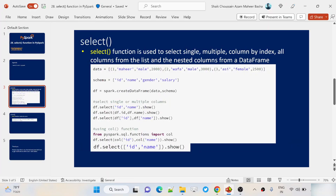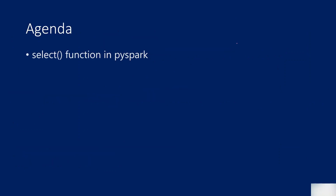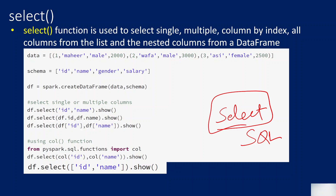Hi friends, welcome to OFA Studies YouTube channel. This is part 28 in the PySpark playlist. In this video we are going to discuss the select function in PySpark. By now if you have seen my PySpark videos you might have a slight idea how the select function works — it is similar to the SELECT we use in SQL. What select helps you do is take one or multiple columns, or even all columns, from a table.